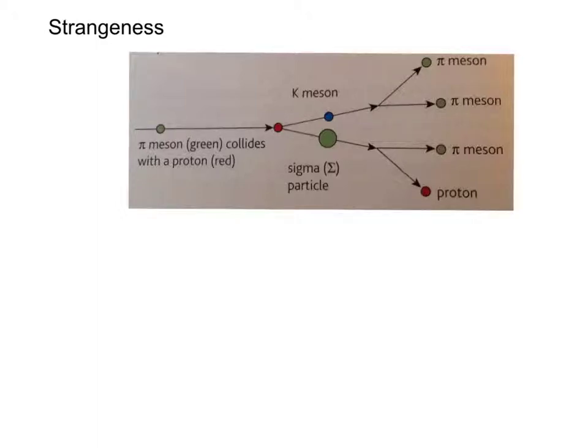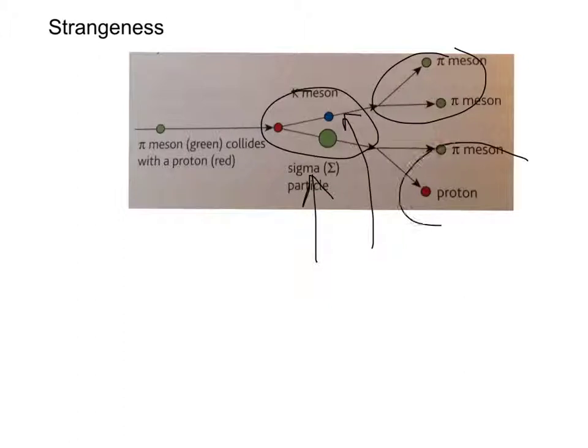So you can see in this diagram here the sigma particle, the K-meson and this is your V-track here. You're also getting a V-track there with the K-meson decaying into the pi-mesons and the sigma-meson decaying into the pi-meson and proton.